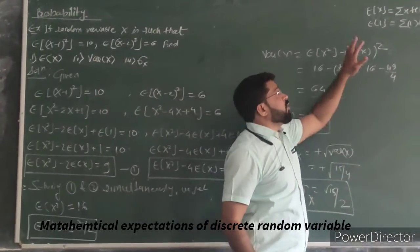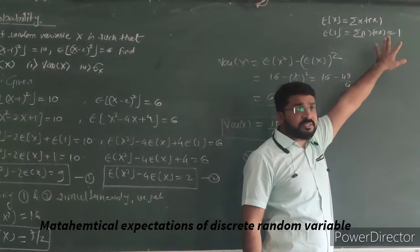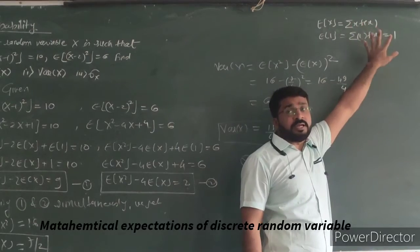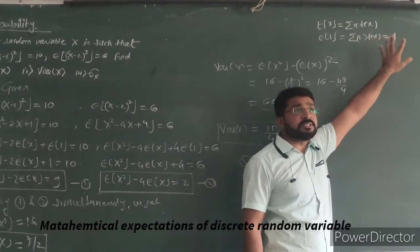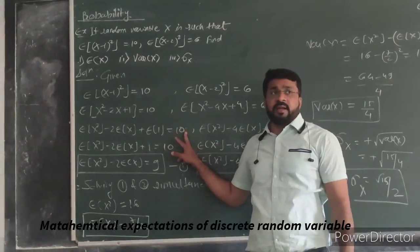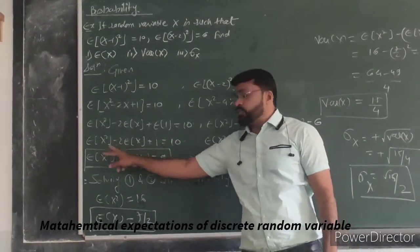Why? It is written here. E(X) is summation of X into f(X), and E(1) will be a summation of 1 into f(X). And we know that sum of all the probabilities is 1. That is why E(1) is 1. So 10 minus 1 is 9. We are having this one equation.